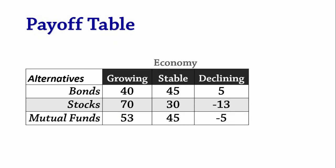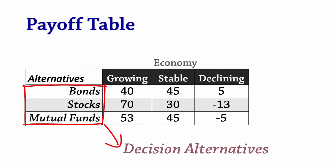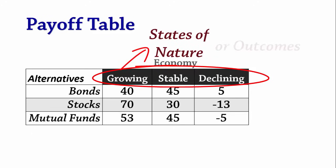The table seen here is referred to as a payoff table or decision table. The alternatives on the left in the rows are referred to as decision alternatives — they are the options available for the decision-maker to choose from. We will assume that the decision-maker can only choose one of these alternatives: investing in bonds, stocks, or mutual funds. In the columns, we have the economic conditions. Since the decision-maker does not have control over these, we refer to them as states of nature or outcomes.